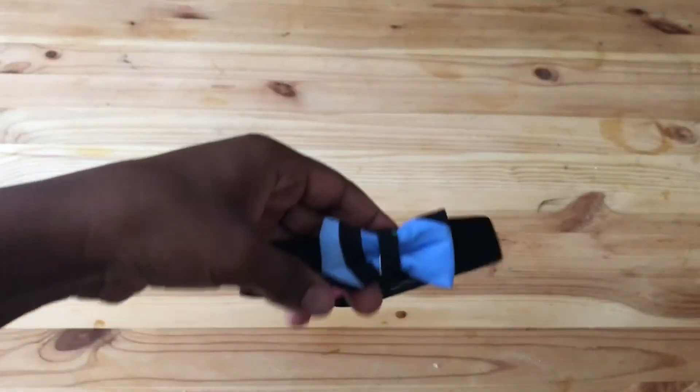And we got a bow choker. Cute as can be, bow choker and bracelet set. Stay tuned for episode three, you're gonna love it.